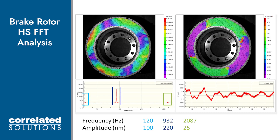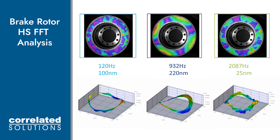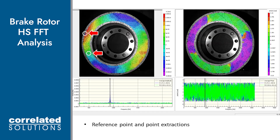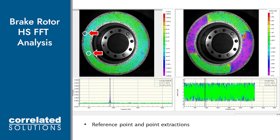When the FFT analysis was performed on the brake rotor, we got three really nice distinct amplitude peaks at 120 Hz, 932 Hz, and 2087 Hz. The highest frequency shape produced the smallest amplitude and was the noisiest, as you might expect. We can see that a very tiny amplitude is measured here, at only about 25 nm. This slide shows the 2D and 3D animations of what each shape at their respective frequencies looks like. Having the 2D data overlay allows us to see clearly where the nodes are for each shape. We can see this best illustrated at the shape at 932 Hz. By default, the average amplitude is shown in the graph. If we want to investigate a single point's amplitude and phase, we can extract that with a point marker. We can do this for several points, and also set any point as a reference to which we can compare the others.